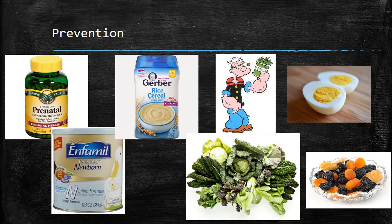Premies are at higher risk because they don't even get to build up a reserve of iron. It's during the last trimester of pregnancy that babies get their shipment of iron from the mom. If they are born before this shipment arrives, they just don't get it.